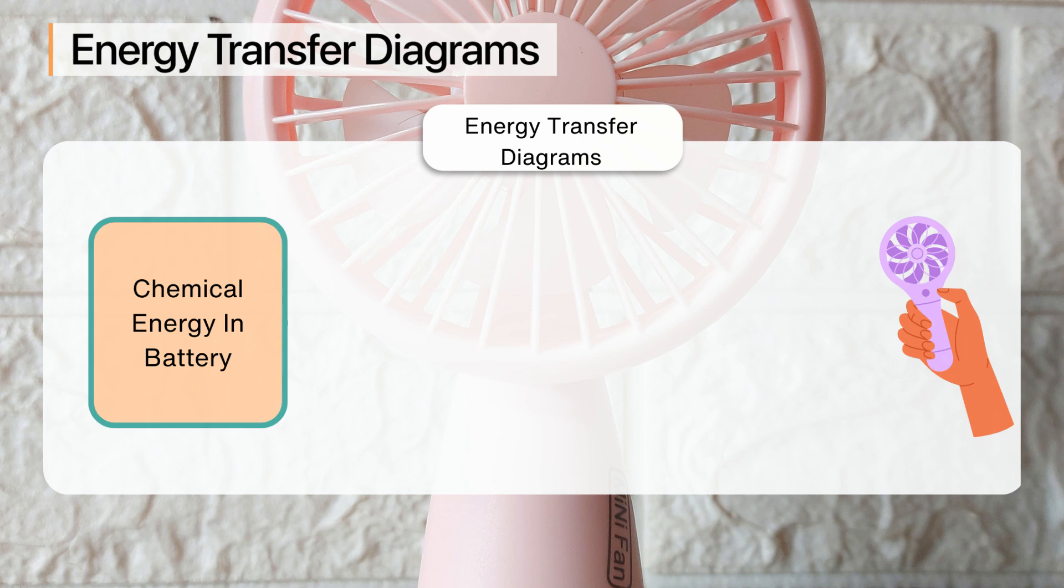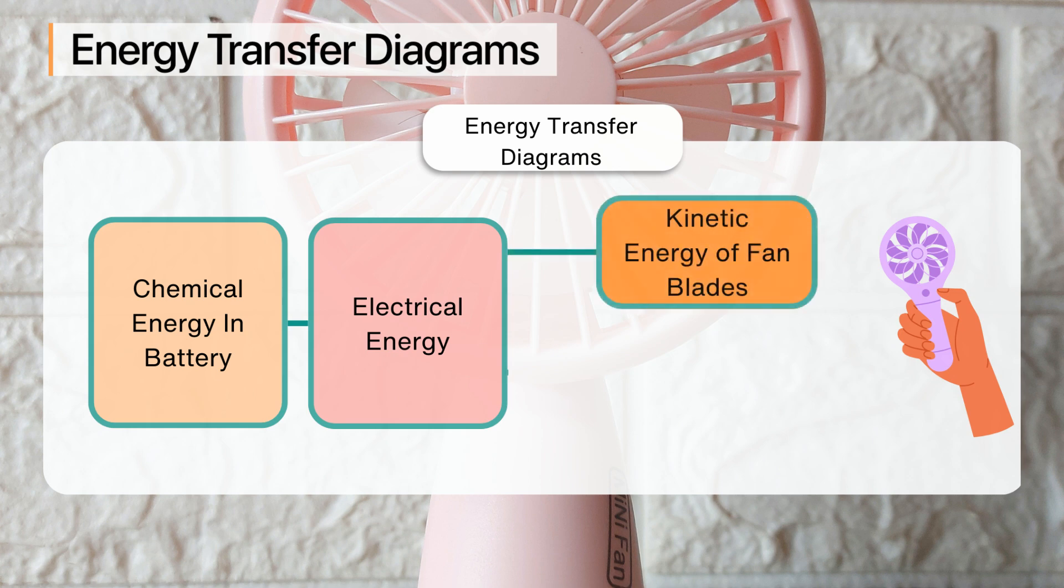When the fan is switched on, the chemical energy in the battery is converted into electrical energy. The electrical energy then powers the motor inside the fan, converting the electrical energy into kinetic energy as the fan blades begin to spin.